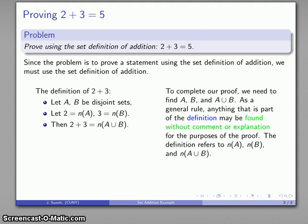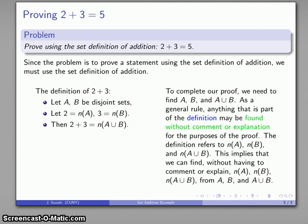So for example here the definition refers to the cardinality of A, the cardinality of B, the cardinality of A union B. And because the definition specifically invokes these concepts, this means that we can just find these things without having to comment or explain how we found them once we have A and B.